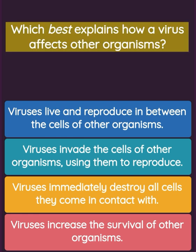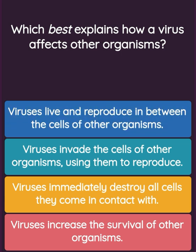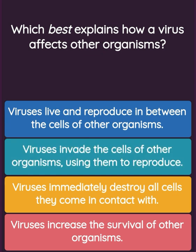Question: Which best explains how a virus affects other organisms? Option one: viruses live and reproduce in between the cells of other organisms. Option two: viruses invade the cells of other organisms, using them to reproduce. Option three: viruses immediately destroy all cells they come in contact with.